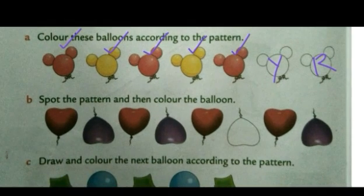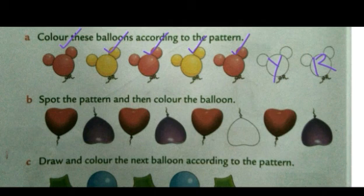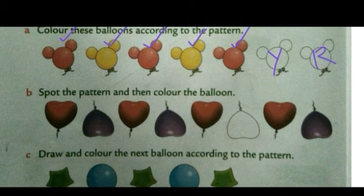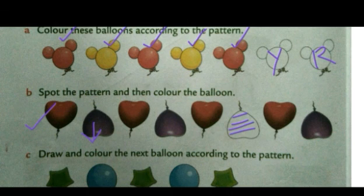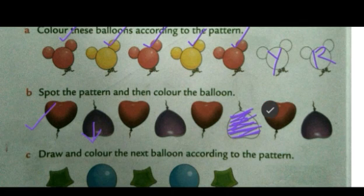See the next one: Spot the pattern and then color the balloon. We also have to see the shape and direction — spot the pattern and then color the balloon. Red balloon facing up, then a purple balloon facing down, then again red facing up, then purple, then red. So what color will come next? Again purple will come, so you need to color purple here. Then again red and purple follow — this is how you spot the pattern and color accordingly.